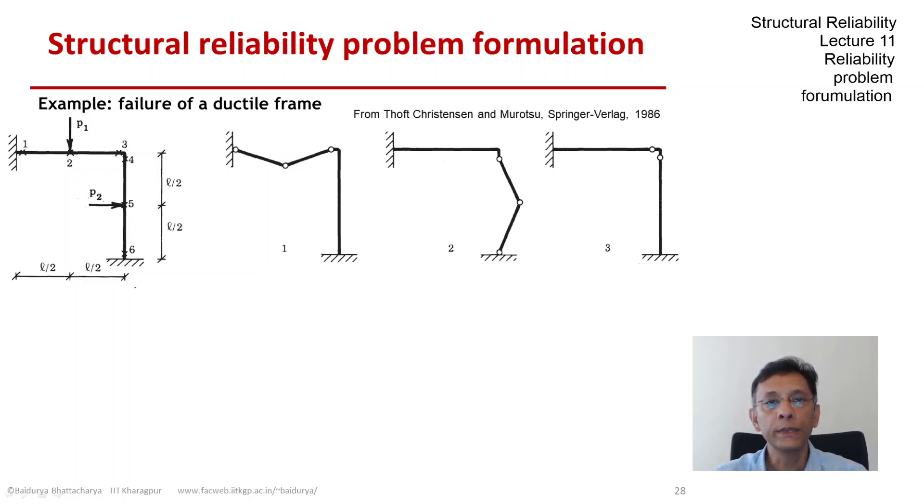There could be 3, 6 minus 3, 3 fundamental mechanisms. Obviously, these fundamental mechanisms are not unique, but here we have a tree that I have taken from the book. Let's solve it for the steps for the first mechanism.